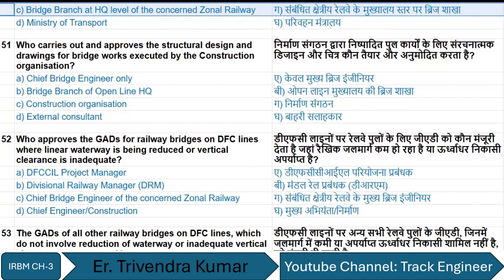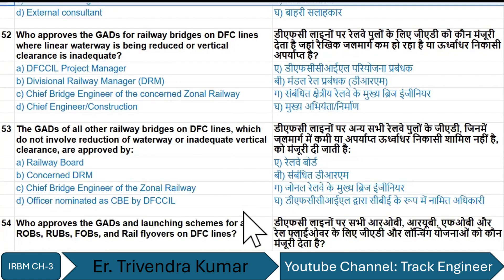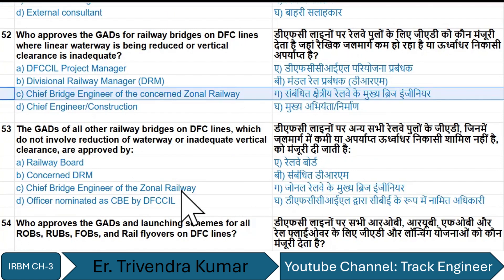Structural design and drawings for bridge works executed by the construction organization are carried out and approved by the construction organization. For the DFC line, the GAD where linear waterway is being reduced or vertical clearance is inadequate is approved by the Chief Engineer of the concerned zonal railway. All other bridges on the DFC line not involving reduction of waterway or inadequate vertical clearance are approved by the officer nominated by the CBE of DFCCIL.